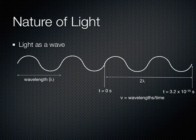Thus, the frequency for this wave is the number of wavelengths, 2, divided by the time it took to achieve the movement, 3.2 times 10 to the negative 15th seconds. This comes out to 6.25 times 10 to the 14th hertz, which is the frequency of blue light.